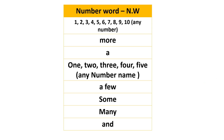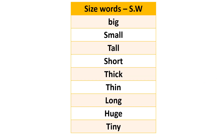Now let's see size words. Size words are: big, small, tall, short, thick, thin, long, huge, and tiny. These all are size words, and in short we can write size word as S.W.